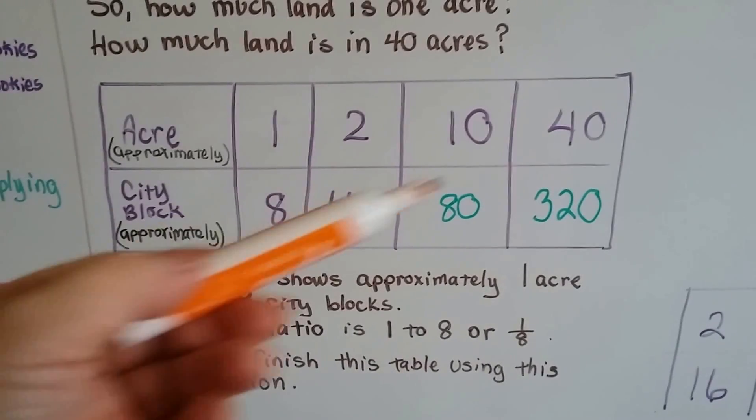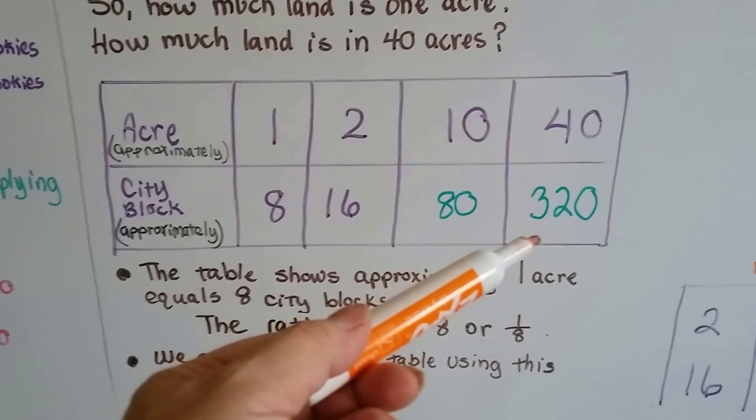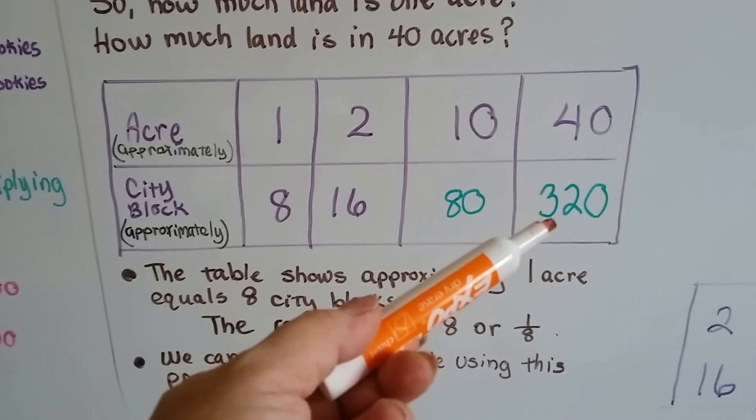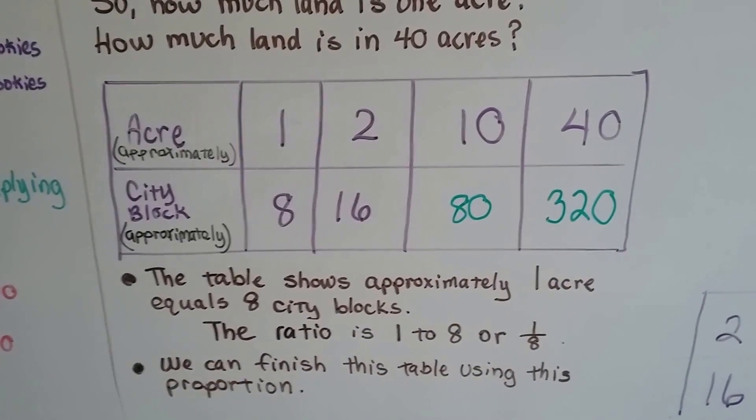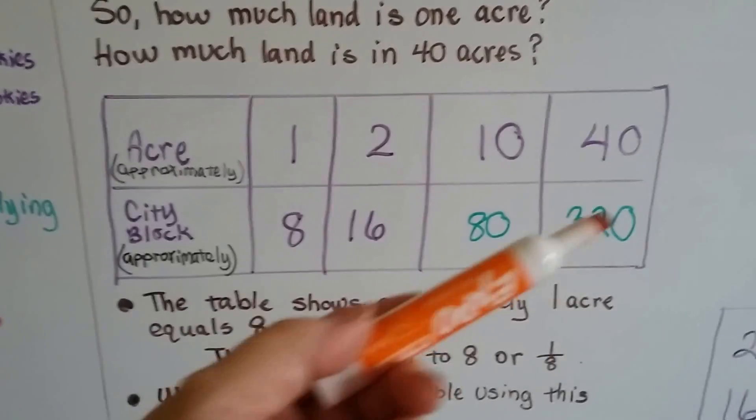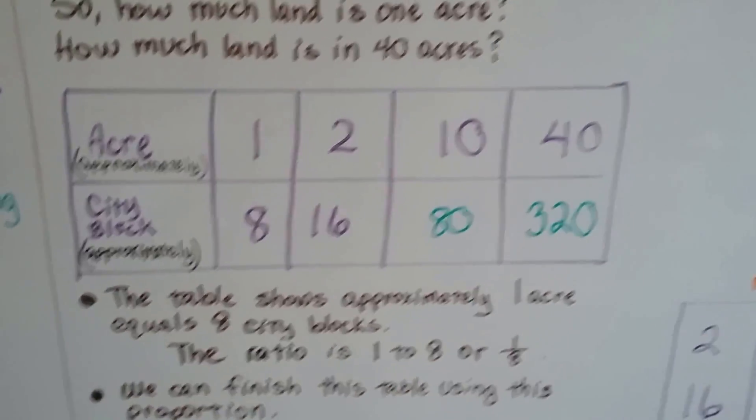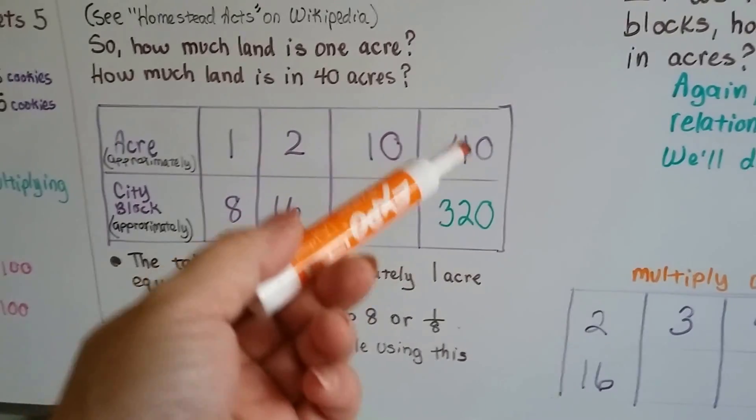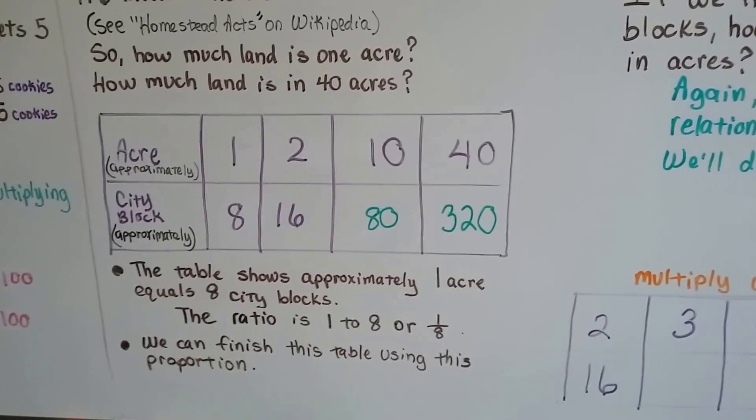Can you imagine having 40 acres? That's 320 city blocks and having to plant the crops and harvest them. That would be a lot of hard work. I give those people back then a lot of credit for the hard work they did. And even nowadays, farmers that are farming, they've got well over 40 acres.